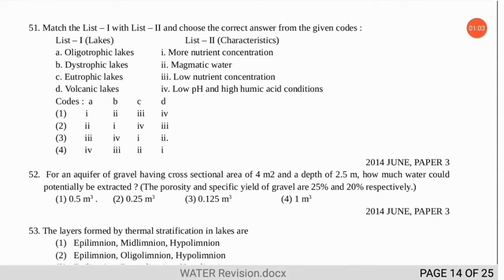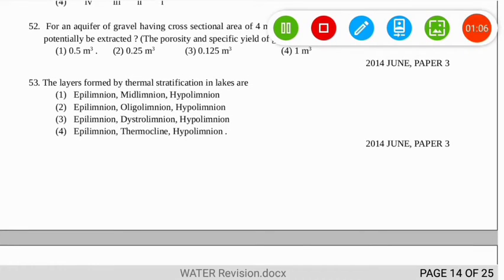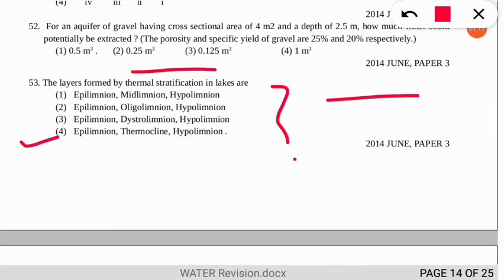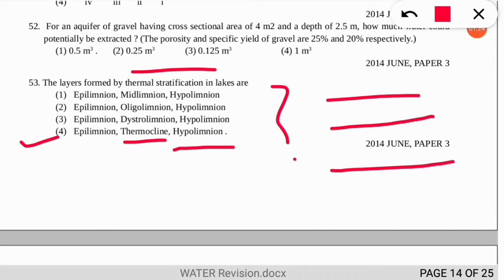Question 53 asks about the layers formed by thermal stratification in lakes. The correct option is number 4. The upper layer is known as epilimnion, followed by the metalimnion which is also called the thermocline, and the lowermost layer is known as hypolimnion.